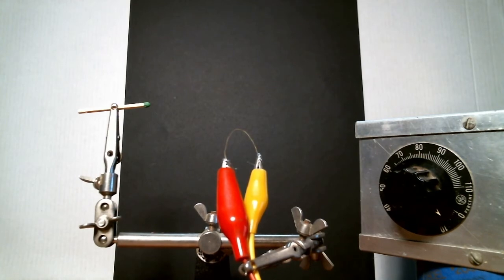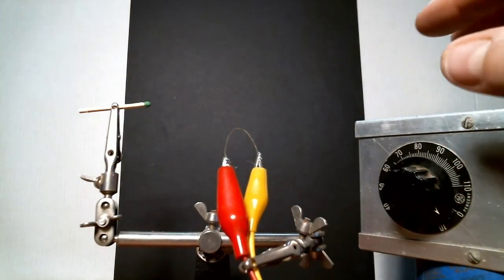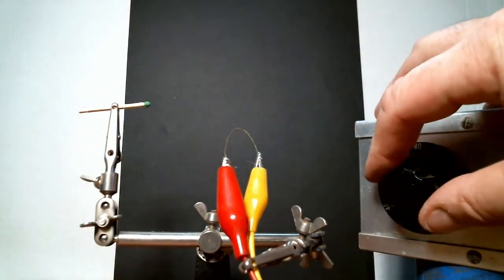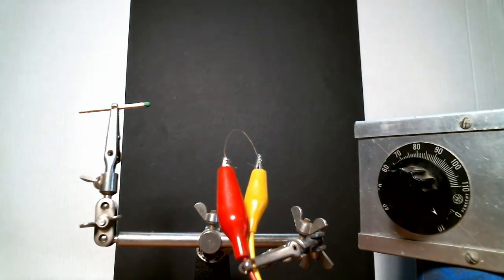Now here's my setup to test how heat affects combustion. What I have is a piece of high resistance nichrome wire between these two alligator clips attached to a rheostat. So if I turn up the current to the rheostat you'll see that the wire glows red hot. So now I can apply heat without having a flame.